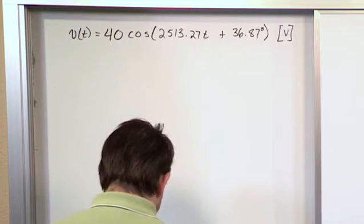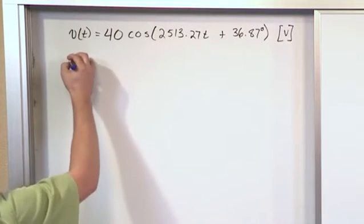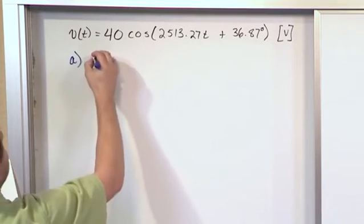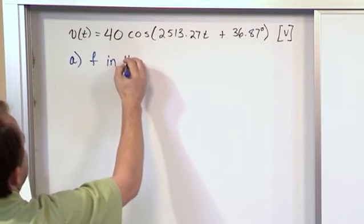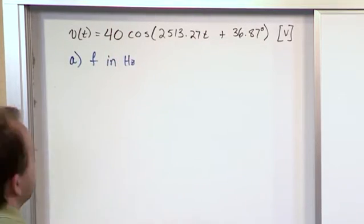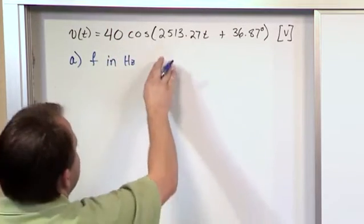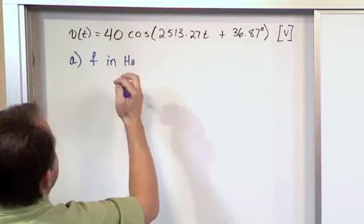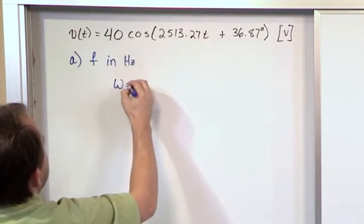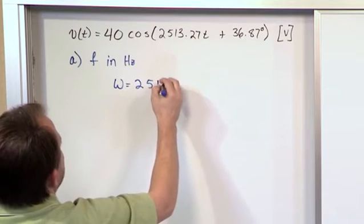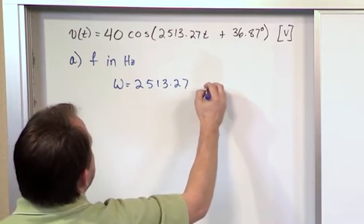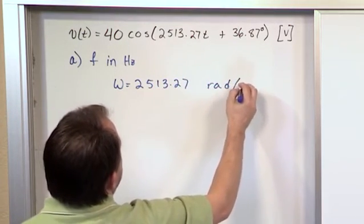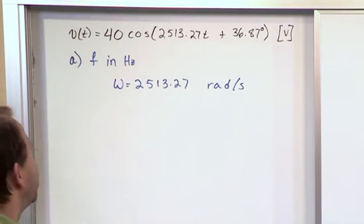So part a says, what is the frequency in hertz? Well the first thing to know is that you're already given the frequency here, but it's just the angular frequency. So you would say omega is equal to 2513.27. The units of angular frequency is radians per second.